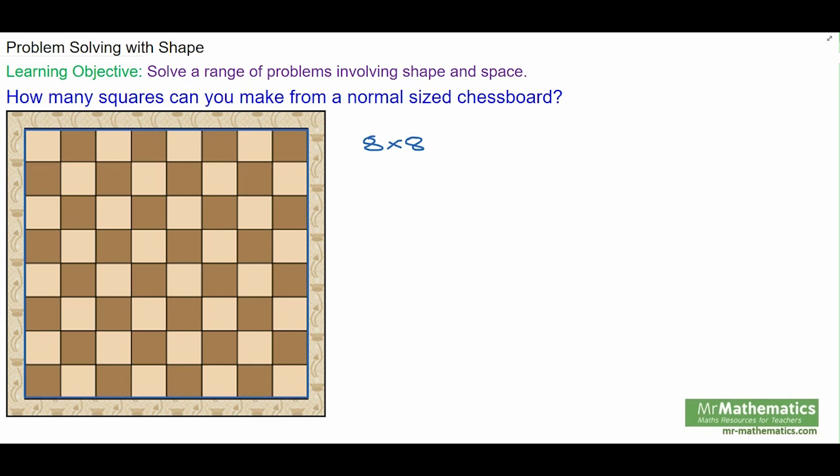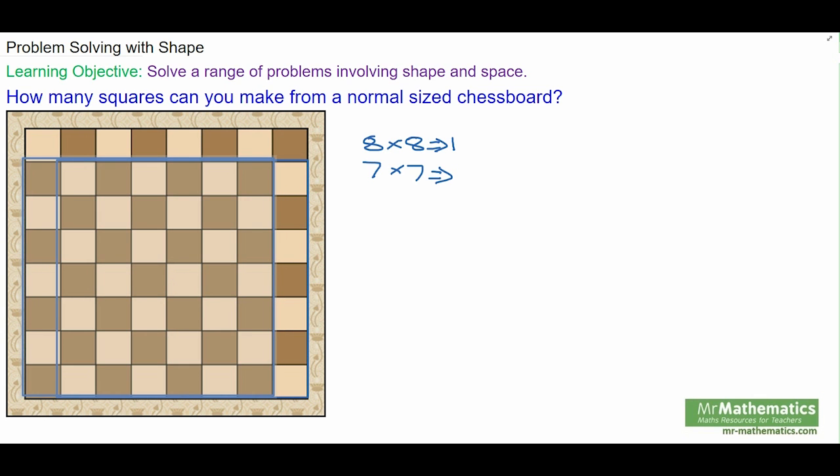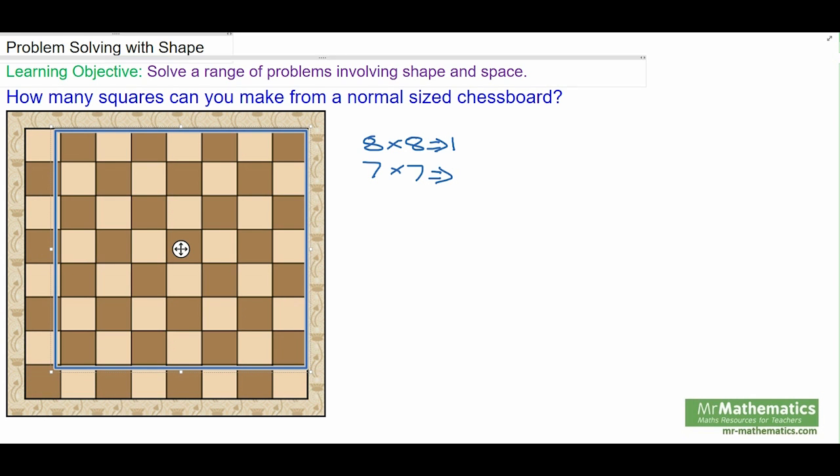Then we'll look at seven by seven squares. You can see if we resize the square, we have one, two, three, four. Four seven by seven squares.